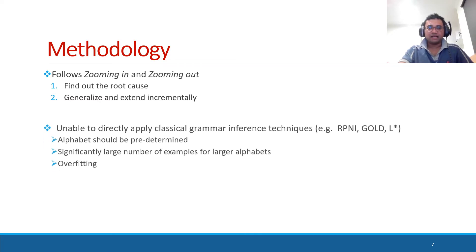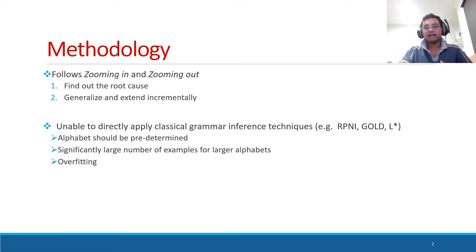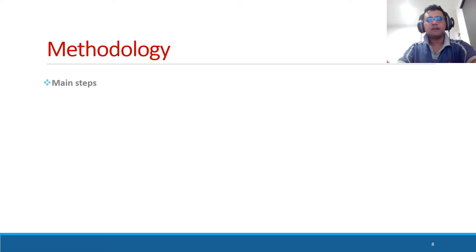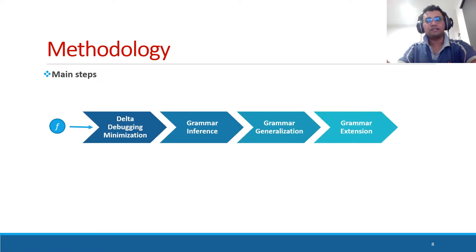Actually, we found that it is difficult to directly apply the classical grammar inference techniques for this task because the alphabet should be predetermined. And when the alphabet gets larger, significantly larger number of examples are required to infer a grammar without overfitting. There are four main steps in Grammar2Fix: delta debugging minimization, grammar inference, grammar generalization, and grammar extension.